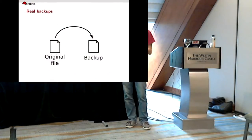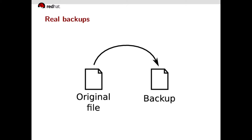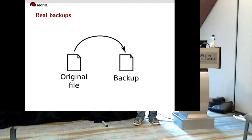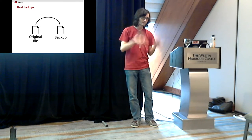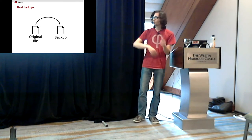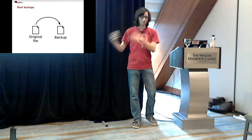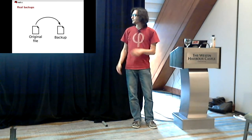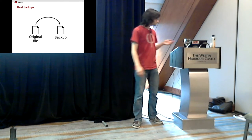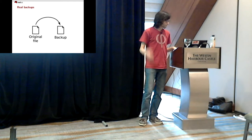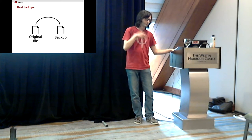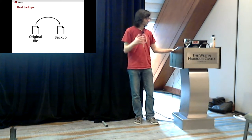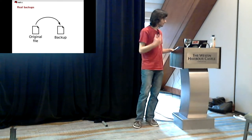The most basic and versatile kind of backup is you have some file and you copy it somewhere else. Very basic, but also very versatile because you can copy it anywhere — on the same disk into another directory, or into some submarine bunker, depending on your needs. Now, this is not very efficient, but efficiency is something you should solve after you've done it right. This talk is mostly about doing it right and not optimizing.